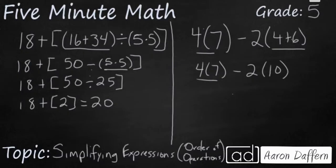Now I have two separate multiplication problems here. So 4 times 7, that's going to be 28 minus 2 parentheses 10. And then 28, that 2 parentheses 10 is really a 20. So that's going to make 8.